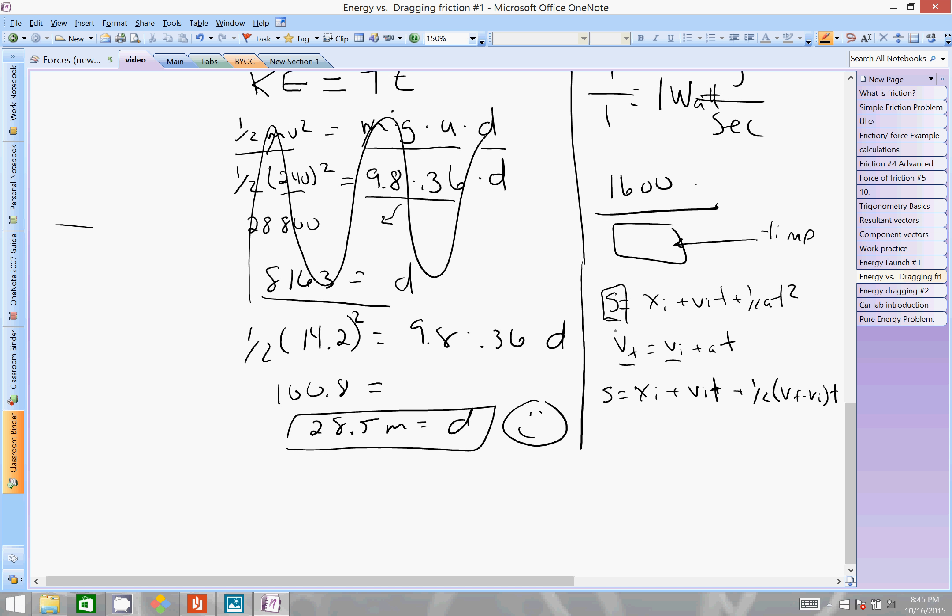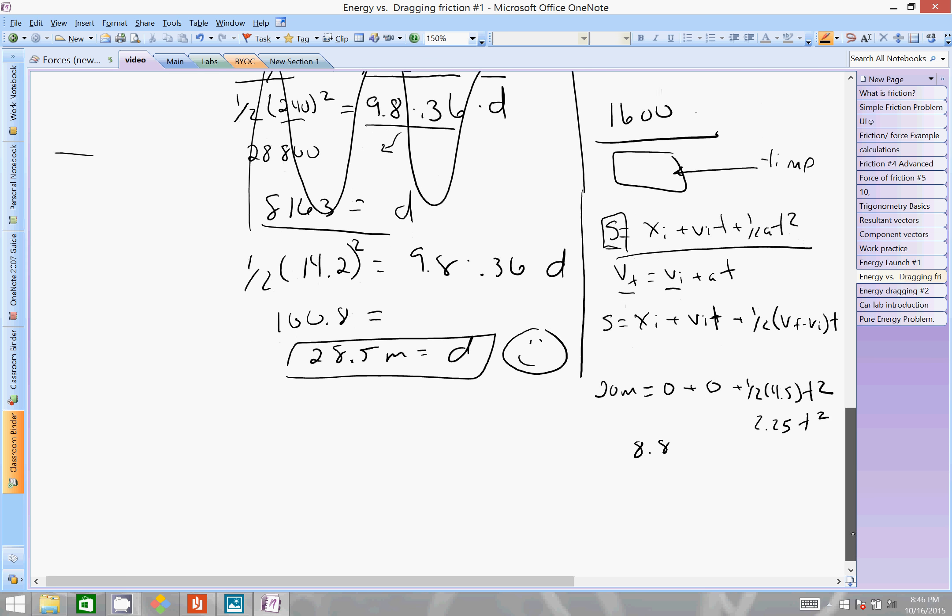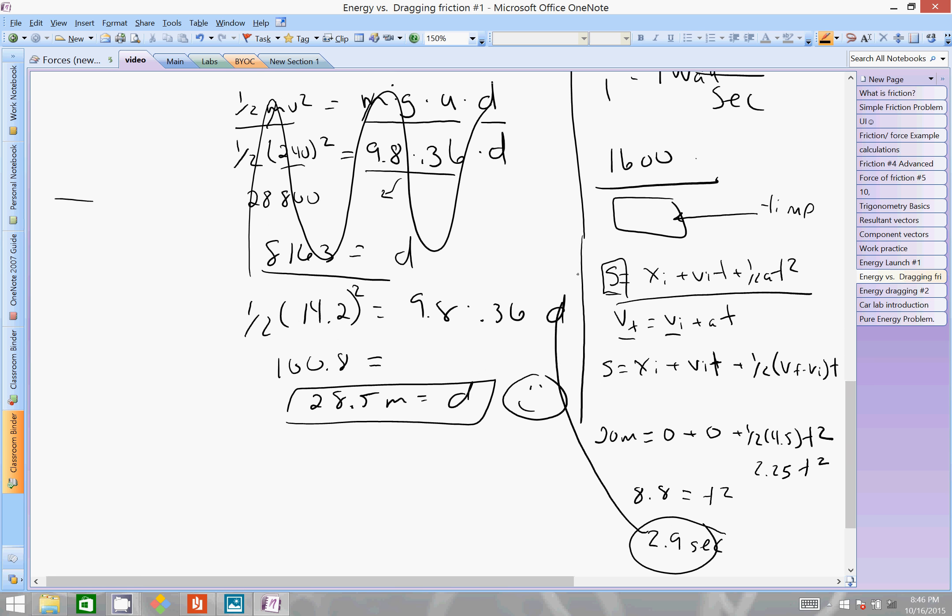So, a few ways we might be able to do this, but let's use the distance formula here. We're going to go 20 meters equals x i which is zero plus the velocity initial is going to be zero because it starts at rest. Plus one half, four point five, and then t squared. This problem's got a bunch of good stuff in it. Four point five times point five equals two point two five. And then t squared. Divide out. Twenty divided by that is eight point eight equals t squared. Square root answer. And I get two point nine seconds.